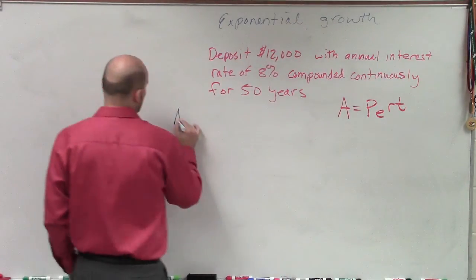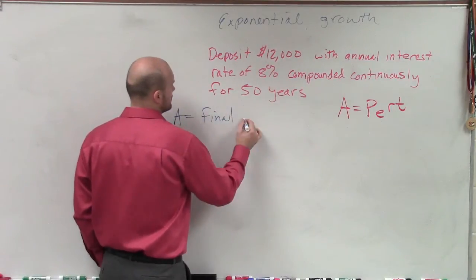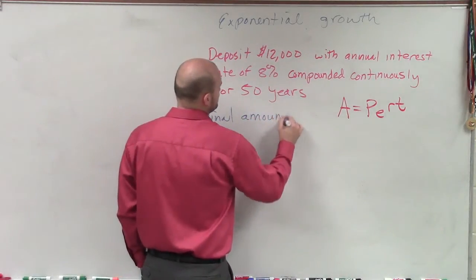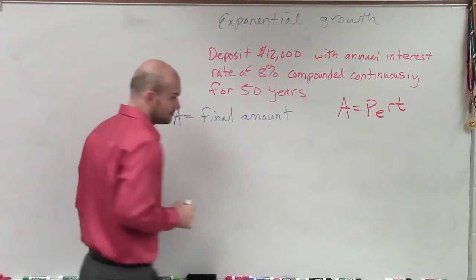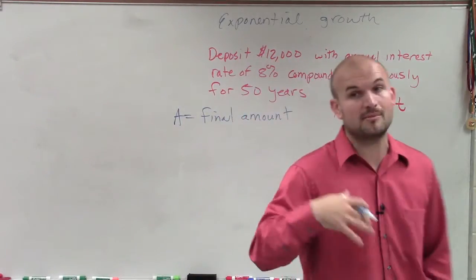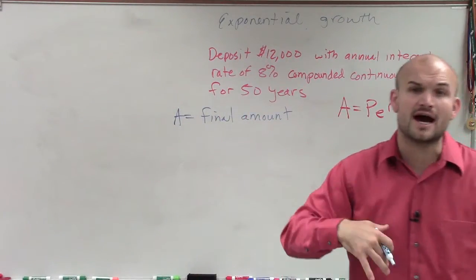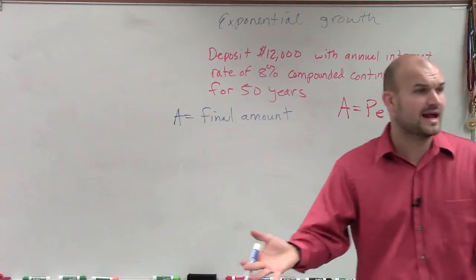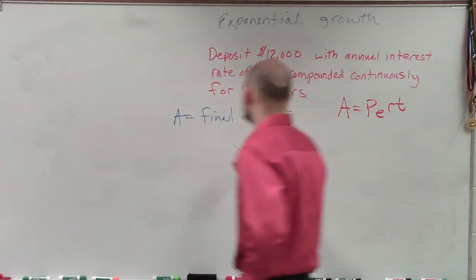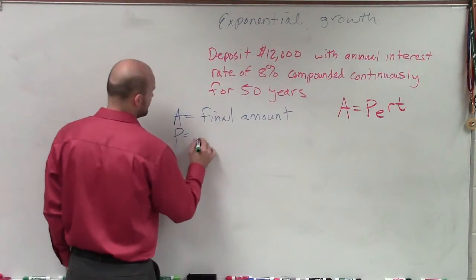A represents our final amount. So if you say you're going to invest some money and you want to know how much money at the end that you're going to have, that's what A is going to represent — your final amount. P is what we call our principal.